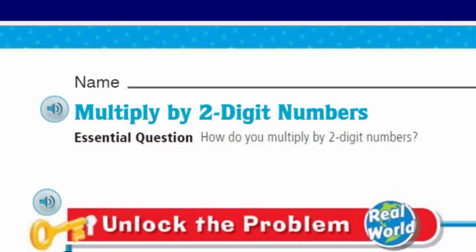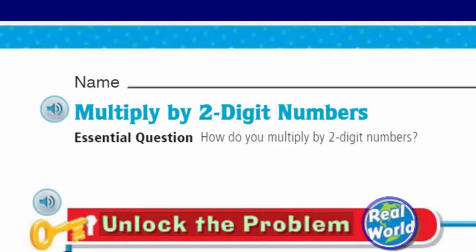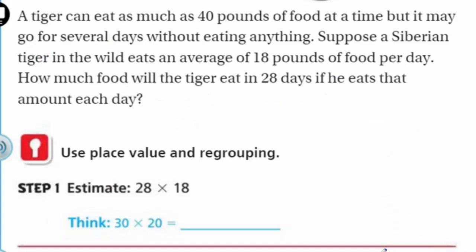We can't do it yet unless we unlock the problem. That's right, my friends, because this is real world. It says a tiger can eat as much as 40 pounds of food at a time, but it may go for several days without eating anything. Suppose a Siberian tiger in the wild eats an average of 18 pounds of food per day. How much food will the tiger eat in 28 days, if he eats that amount each day? That means multiplication — use place value and regrouping, exactly what we did on our previous lesson.